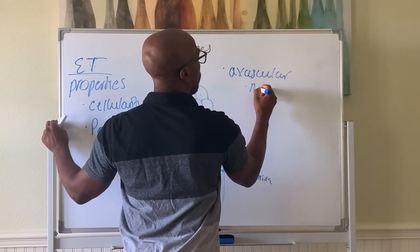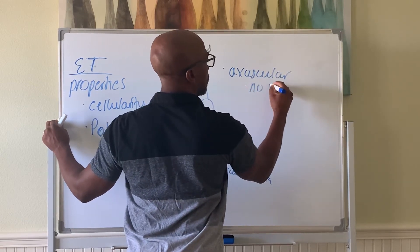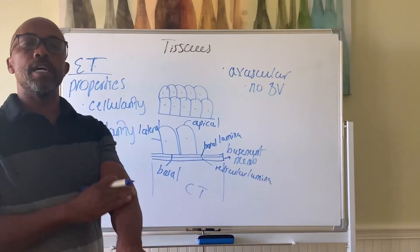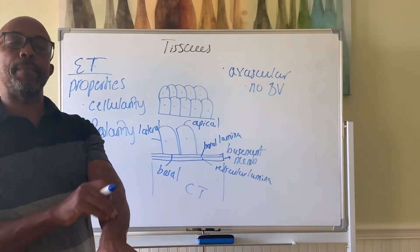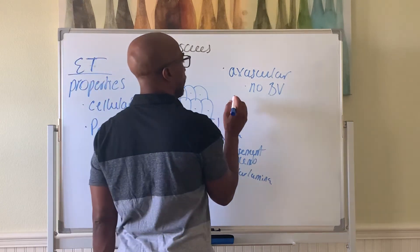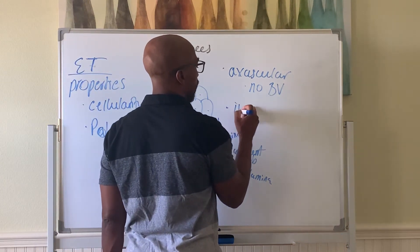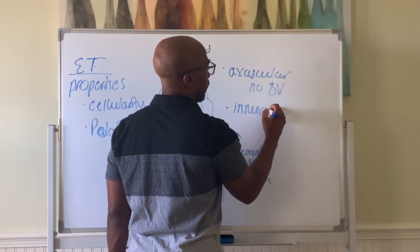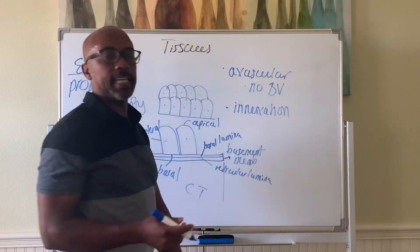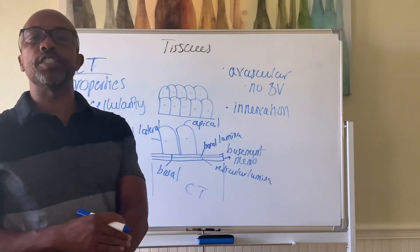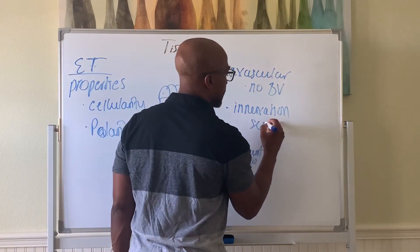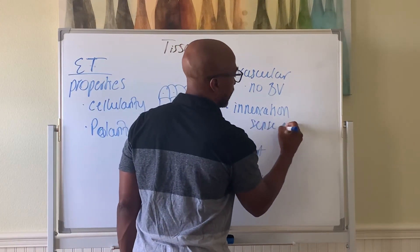Another feature of epithelial tissue is that it is avascular, meaning there are no blood vessels in ET. That's why you can scratch yourself without bleeding — there are no capillaries there to break. Even though it's avascular, it is still innervated, meaning neurons are present so you can sense the environment through your epithelial tissue.